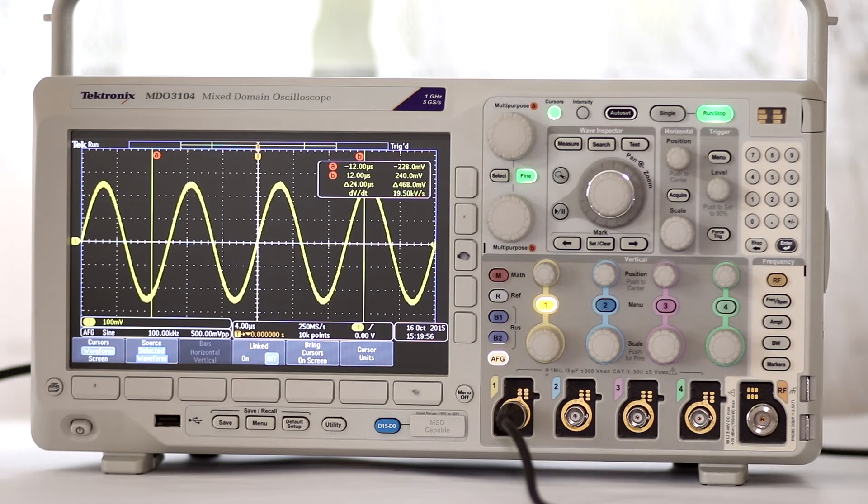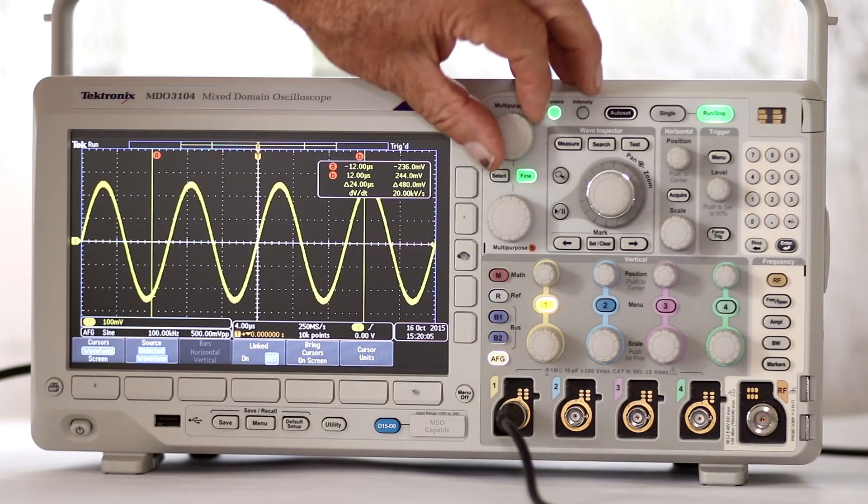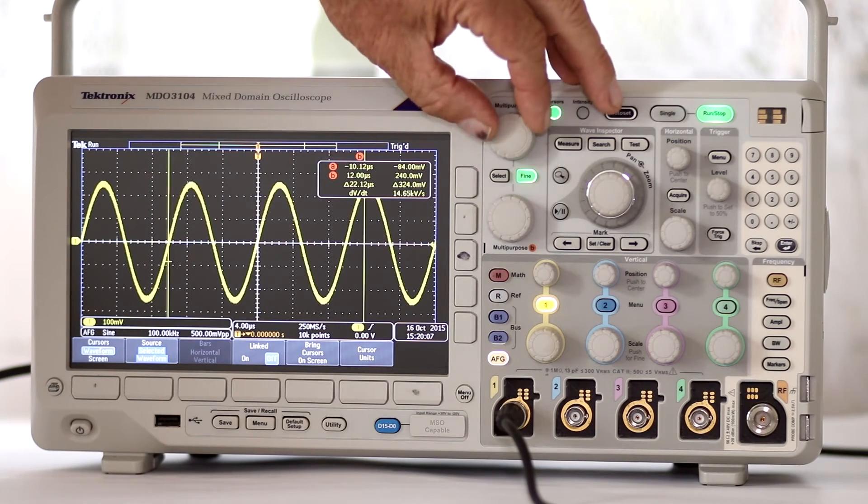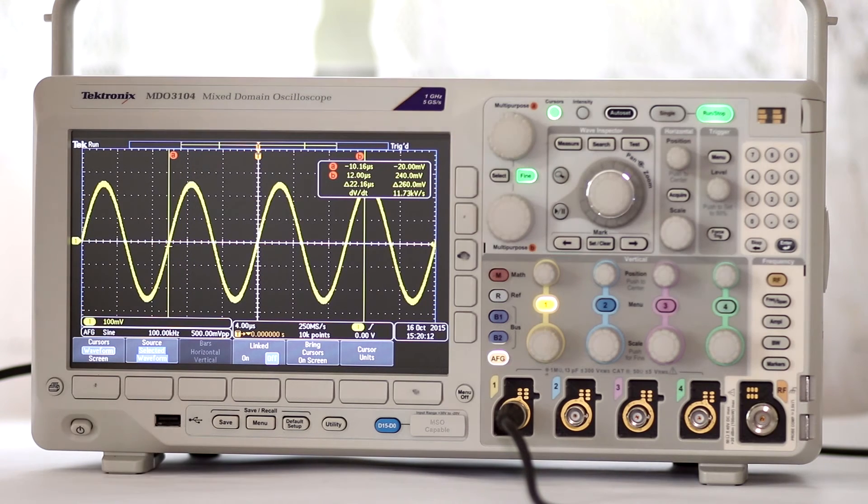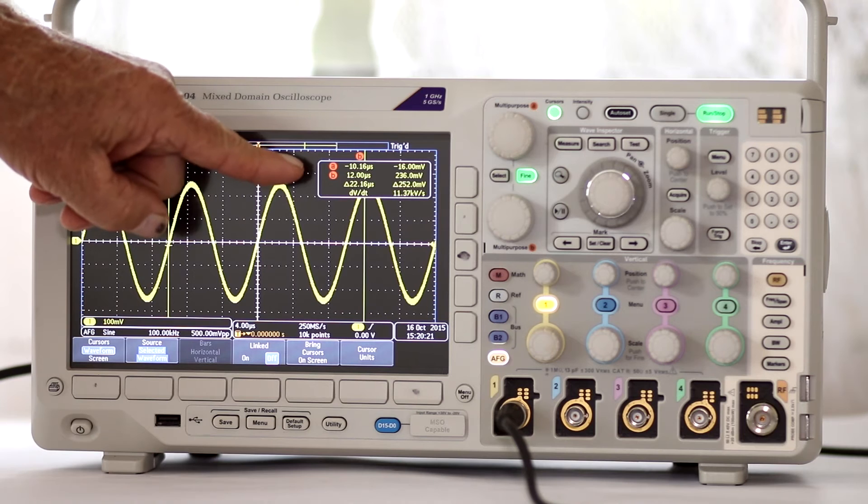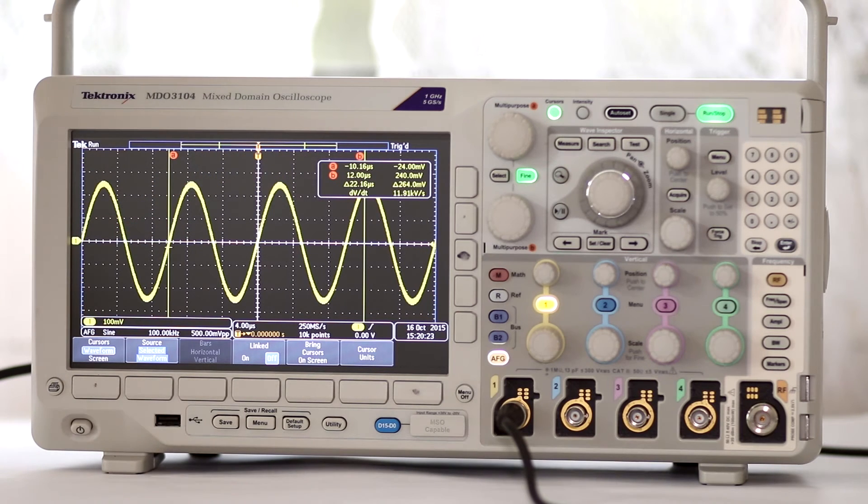Multipurpose knob A moves left cursor in either direction so that it intersects the x-axis at different points along the timeline. As you do this, appropriate values in the cursor readout at the top right of the display change. In the left column, labeled A, top line, the absolute value in microseconds changes.